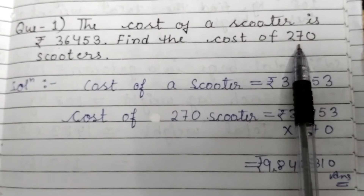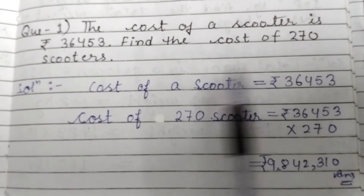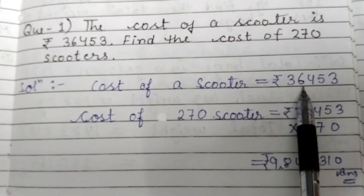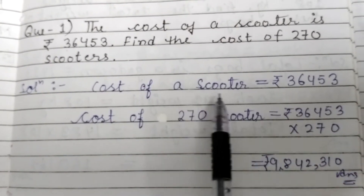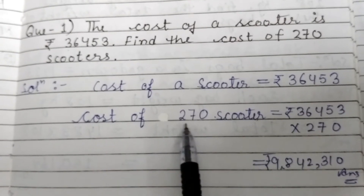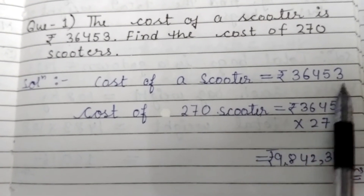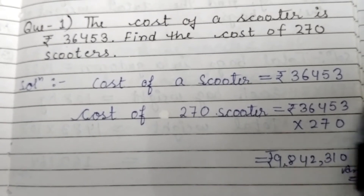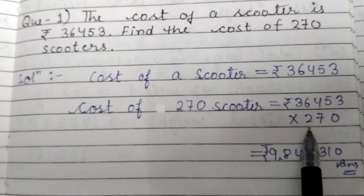First of all we will write the statement: cost of a scooter is 36,453. We need to find the cost of 270 scooters. To get the total cost, we will multiply the cost by 270.